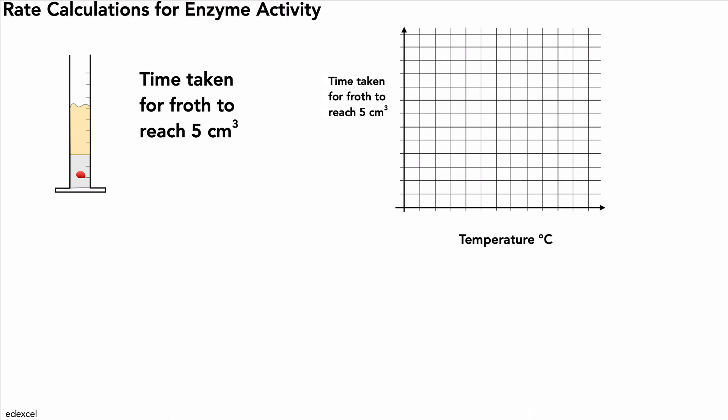And at a low temperature, we would have a very slow reaction, so it would take a long time for the froth to reach five centimeters. And at a high temperature, it would also take a long time as well, because of the denaturing of enzymes. The graph would look something like this.